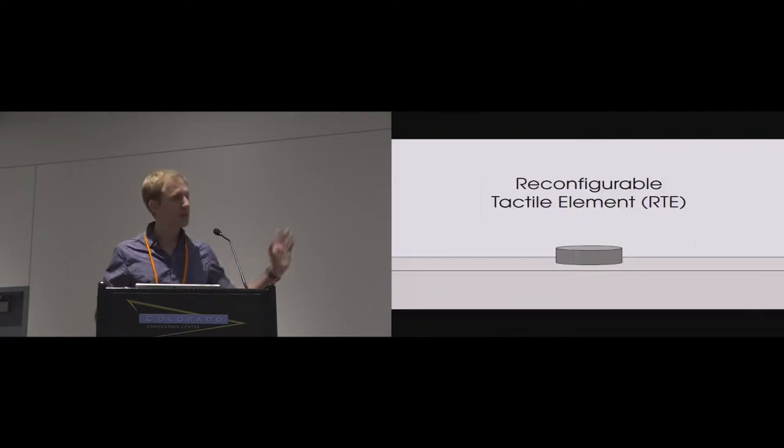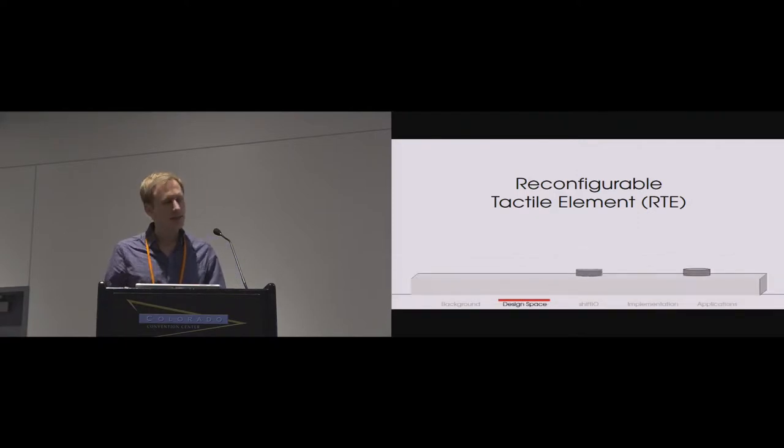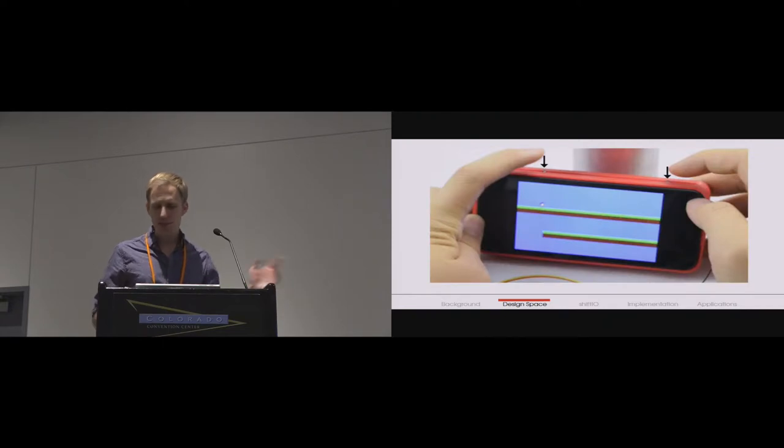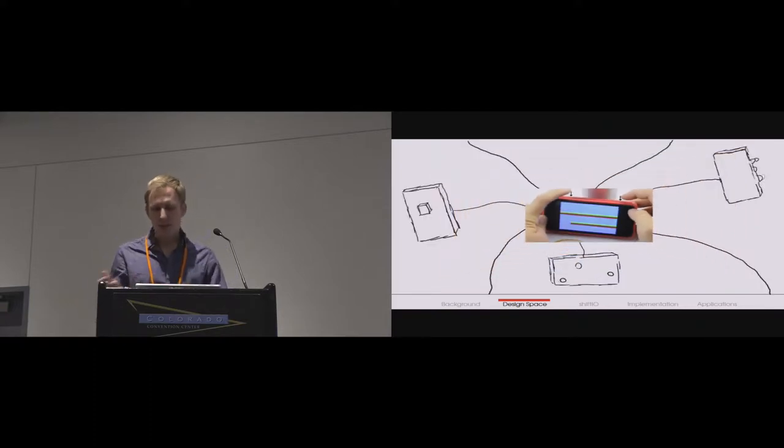So in general, the ShiftIO prototype I briefly showed is a realization of a new type of interface that we call the reconfigurable tactile element interface. In an RTE interface, physical interactive elements, called RTEs, can appear on a device, relocate, reconfigure, combine, and disappear to generate various controls, to provide haptic feedback, and to enable tactile display. The prototype I showed with its design and its interactions is just one possible type of RTE interface out of a much larger design space. So before describing our implementation in detail, I'll briefly give an overview of some possible interactions on RTE interfaces.